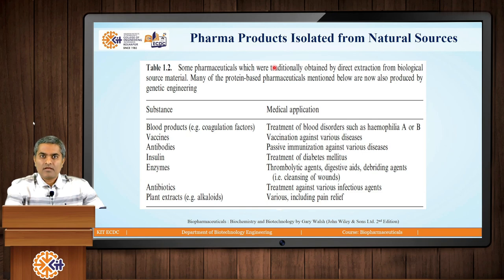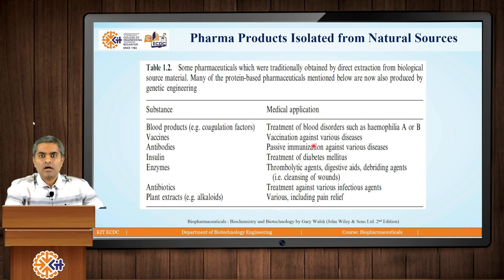But currently also, pharma products are isolated from natural sources. These are few examples: if we consider blood products, that is coagulation factors and albumin proteins, these are collected from natural sources like plasma or blood. If we talk about antibodies, they are also used for passive immunization, and these kinds of agents are also isolated from blood or plasma. If we consider antibiotics, they are isolated from microorganisms by fermentation. And still in practice, there are plant extracts like alkaloids which are isolated from plants — all working as pharma products in the current market.